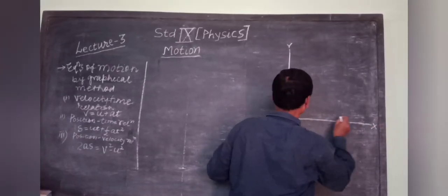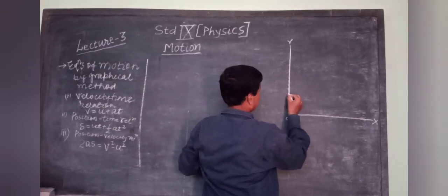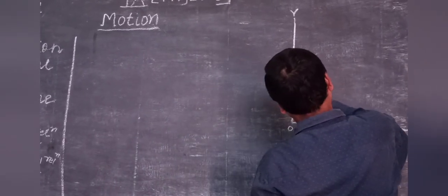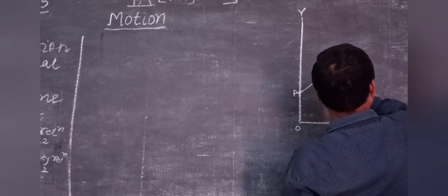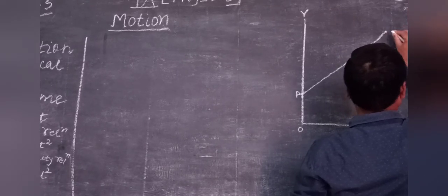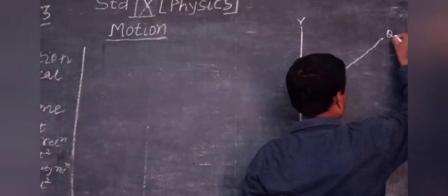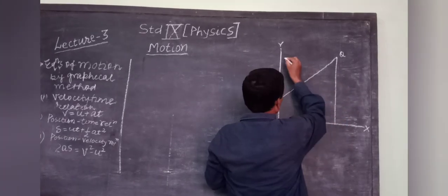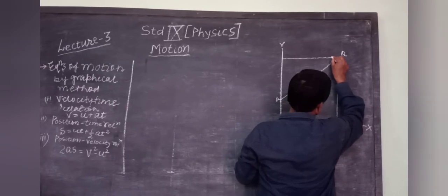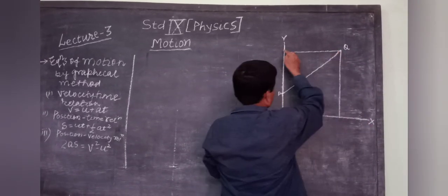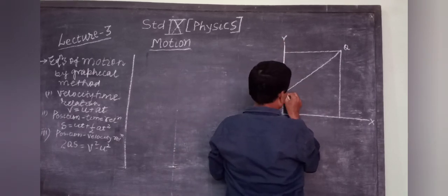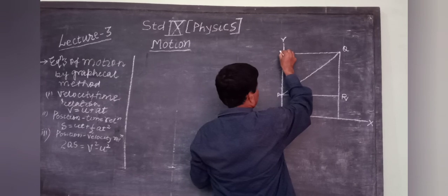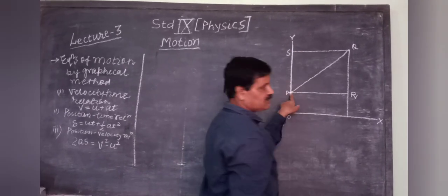This is your x-axis and y-axis. O is the origin, P is the initial point — the body is here. And after some time t, it reaches at this point, that is your Q. We draw perpendiculars from Q to the axes. This perpendicular is to the x-axis and this perpendicular is to the y-axis. And this perpendicular is also drawn. This point is your R, and this point is S.